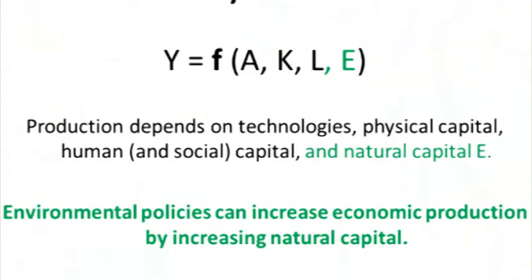This is a basic growth theory. When we want to add the environment into this — and it started in the 70s — people began to consider the environment as an additional input in the production function. So we would have technology, physical capital, labour, and the environment. For instance, the soil and the water that we use for agricultural production.